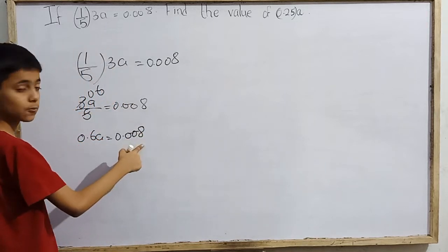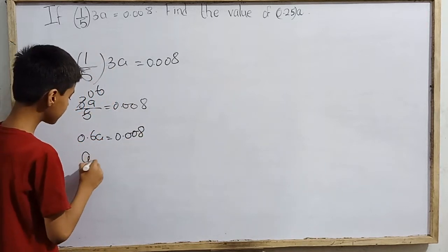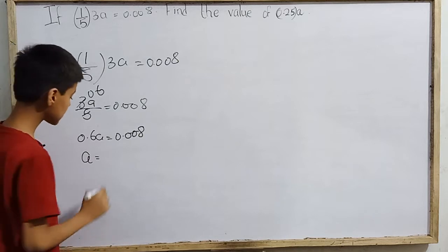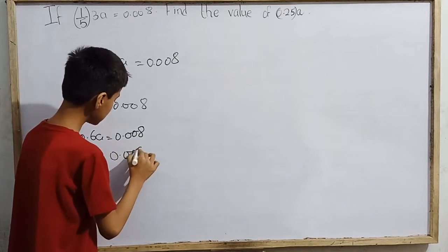So if 0.6a equals 0.008, implying that dividing both sides of the equation by 0.6, this a value is 0.008 by 0.6.